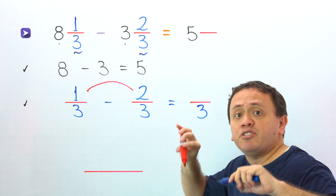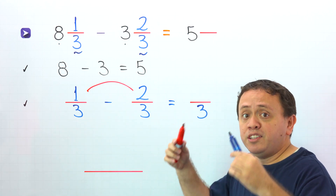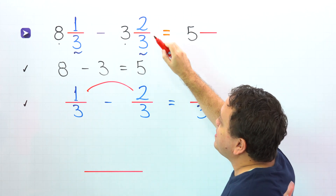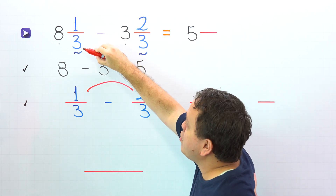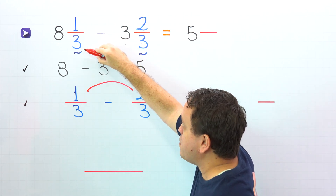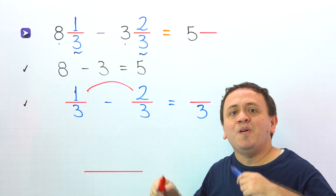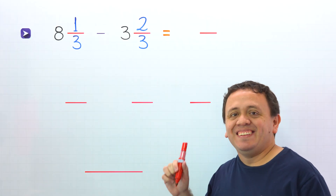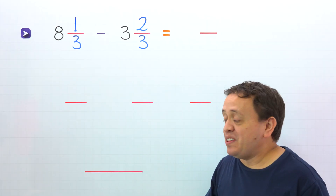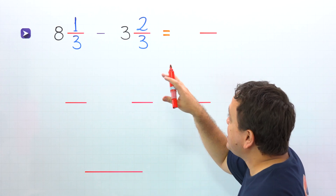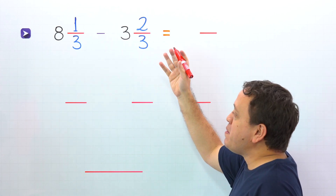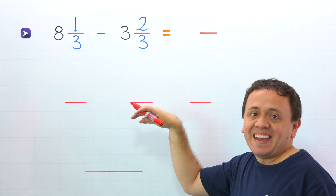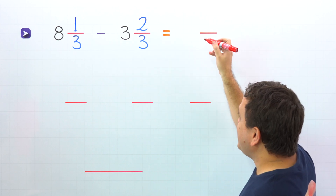This is a special case. In this special case, the fraction of the second mixed number is greater than the fraction of the first mixed number. In this case, we need to follow a different procedure. Pay attention — this is the strategy for this special case: we're going to convert both mixed numbers to improper fractions and then we're going to find the difference.